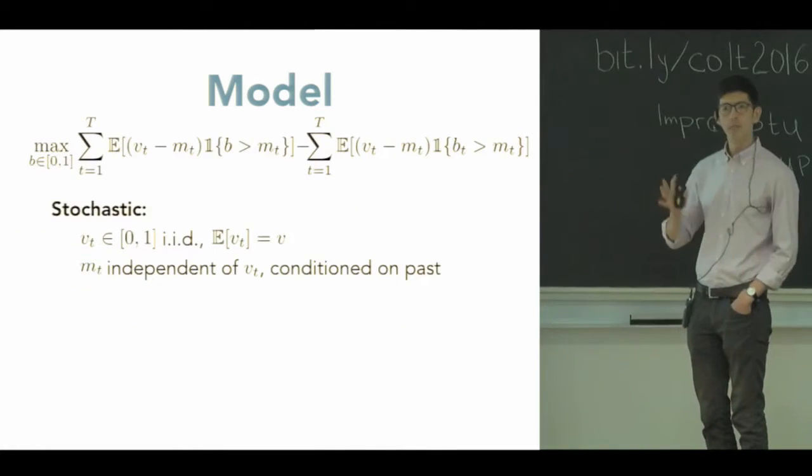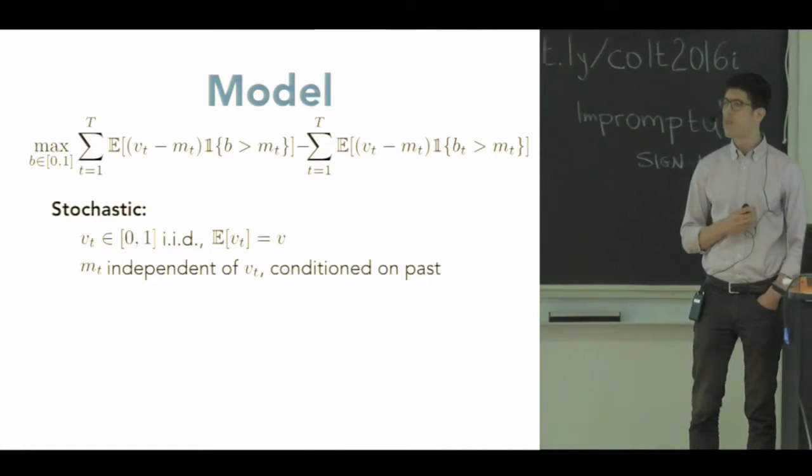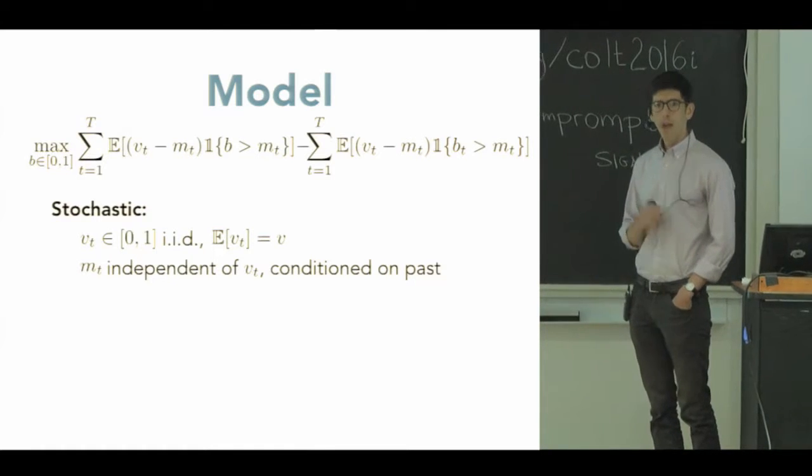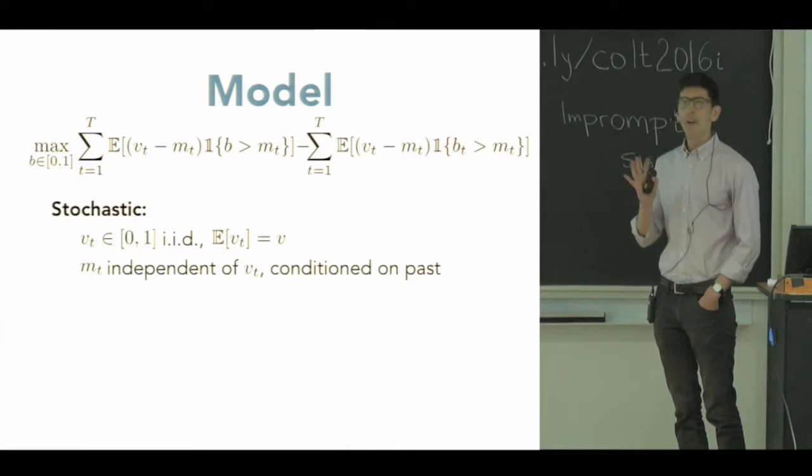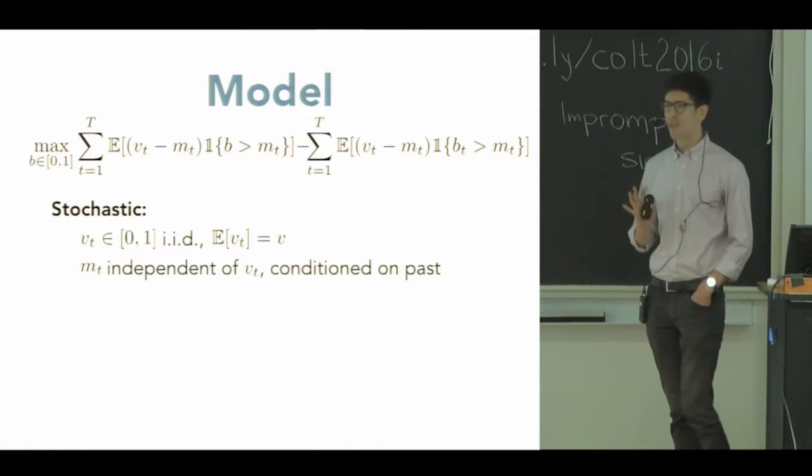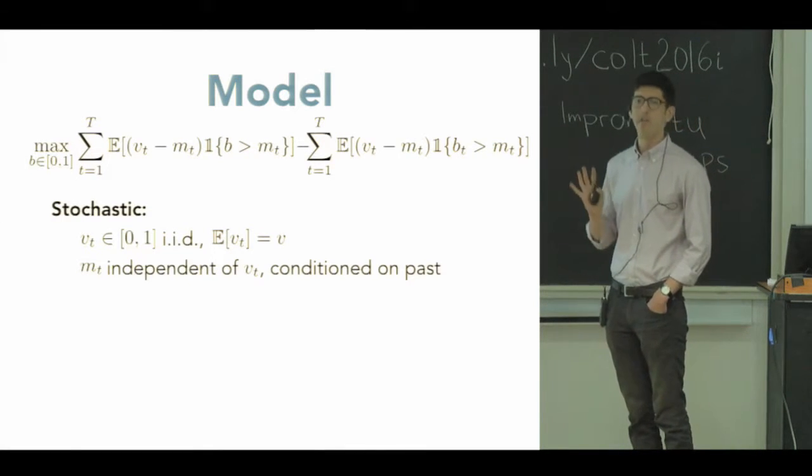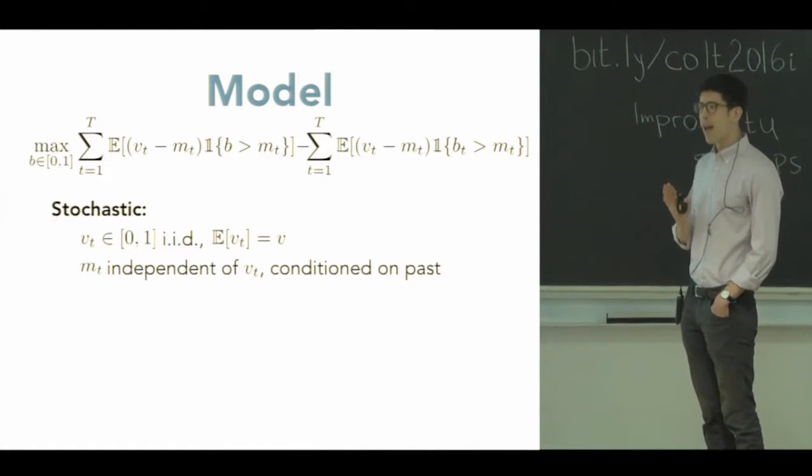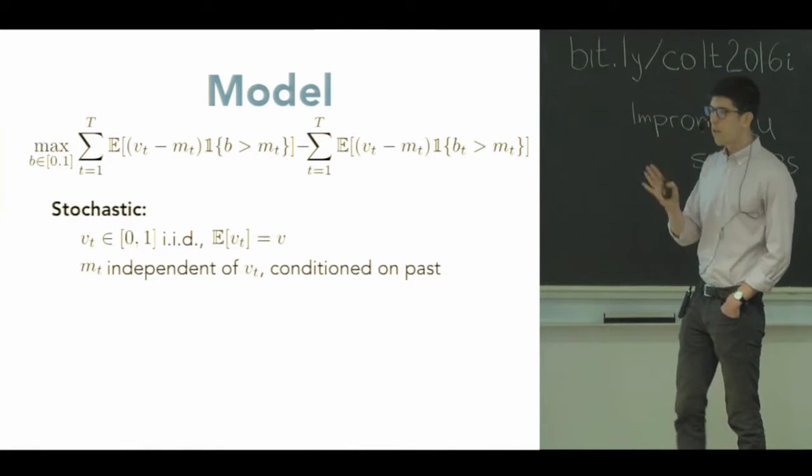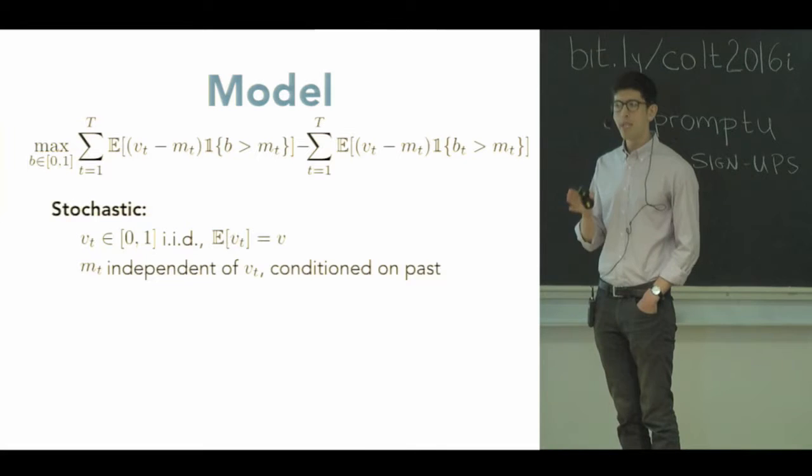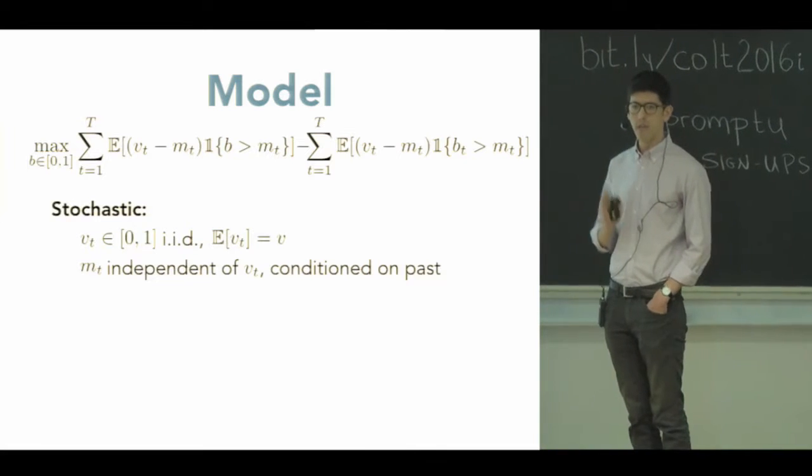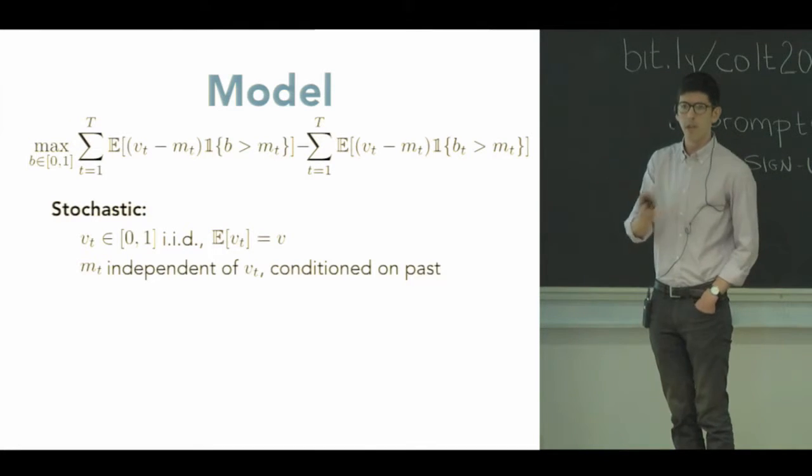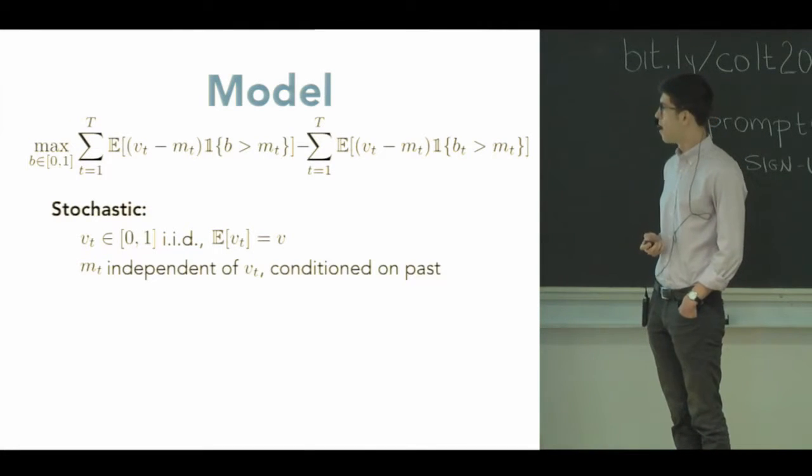So the first model we imagine is some sort of stochastic setup where there's some underlying distribution that these V_T are being drawn from, IID, with an expected value of V. Now what assumption should we make on the other bidders? We don't want to necessarily make the assumption that they are also playing somehow randomly, stochastically. But I do want to imagine that they don't have any special access to the randomness at V_T. So they're allowed to learn from the past as well. But conditioned on the past, M_T should be independent of the value V_T that happens at time T. This is a situation where the sellers don't give extra information to other bidders other than you. That's our stochastic setup.